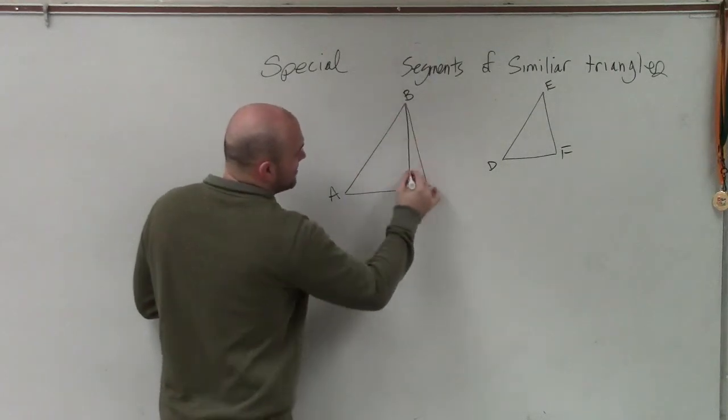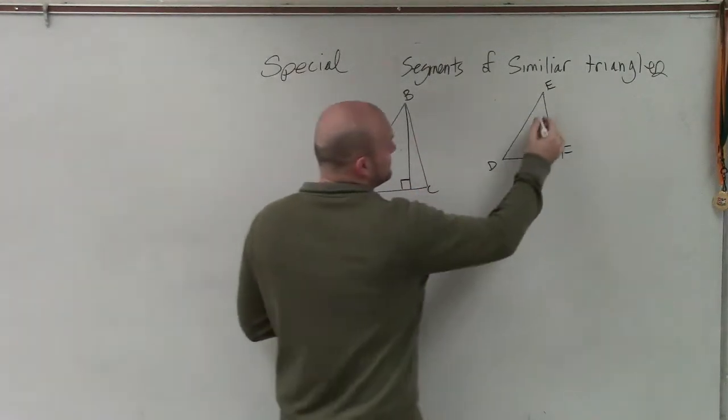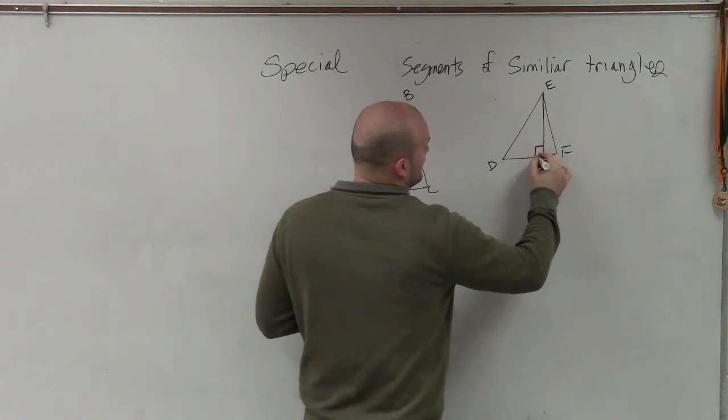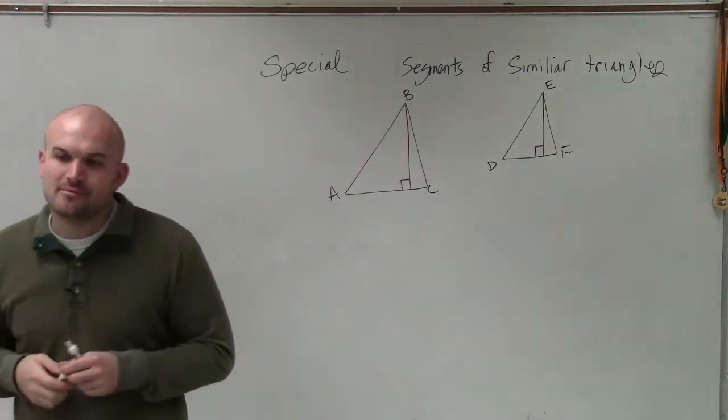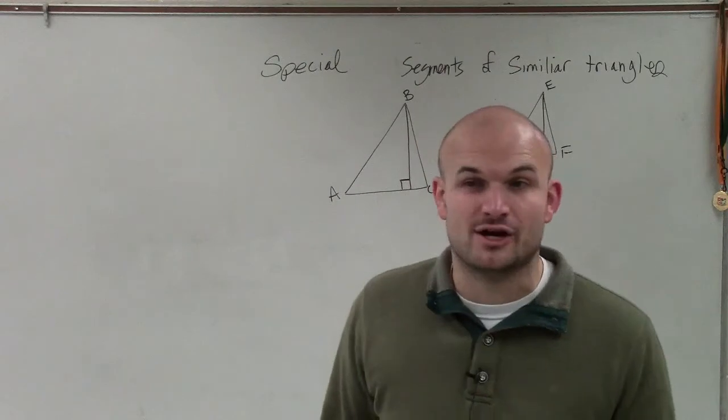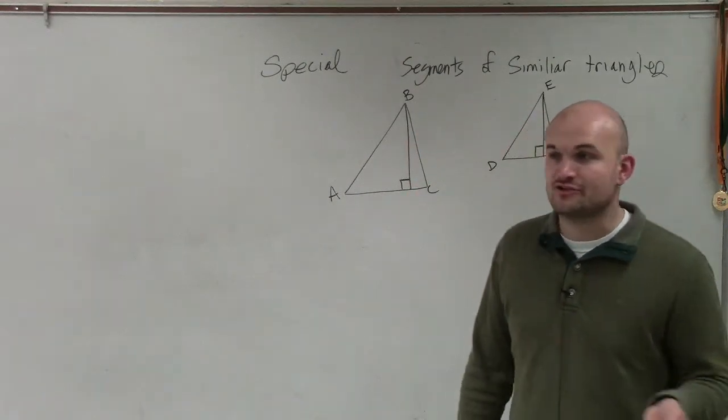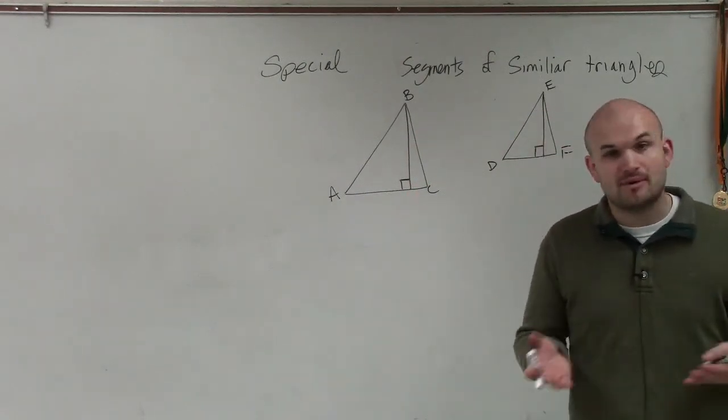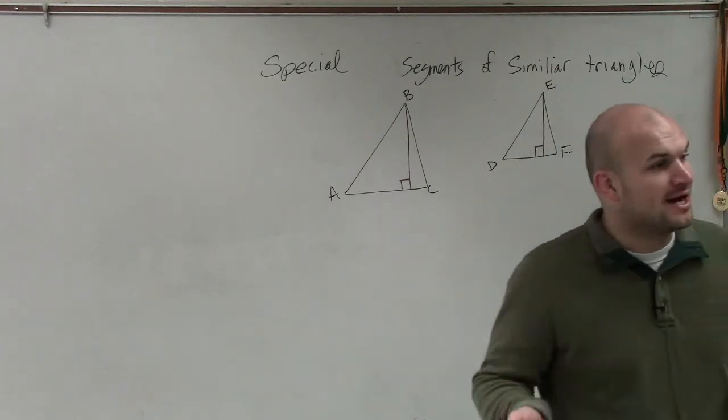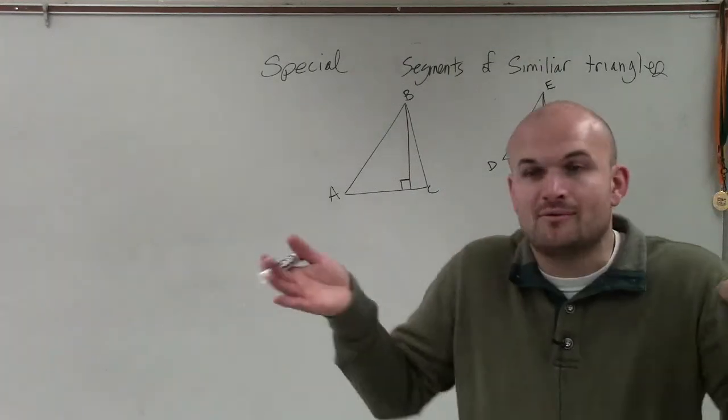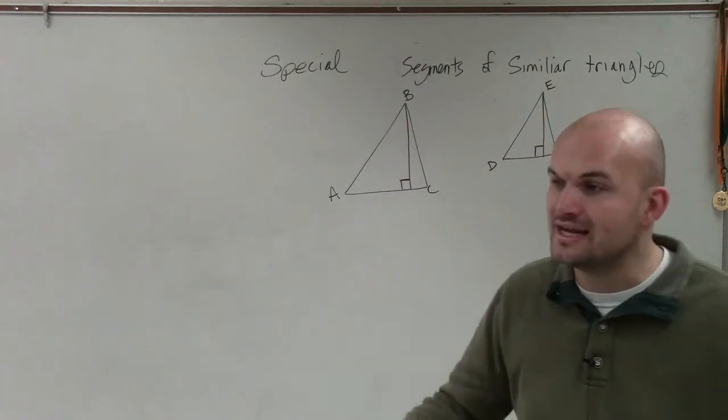The first special segment we're going to talk about is what we call the altitude. Now, you guys should be familiar with altitude. We use the altitude when we're trying to find the area of a triangle, and that triangle is not a right triangle. Remember, we always had to find base times height. And a lot of times we had to find the altitude, which defines the height of that triangle.